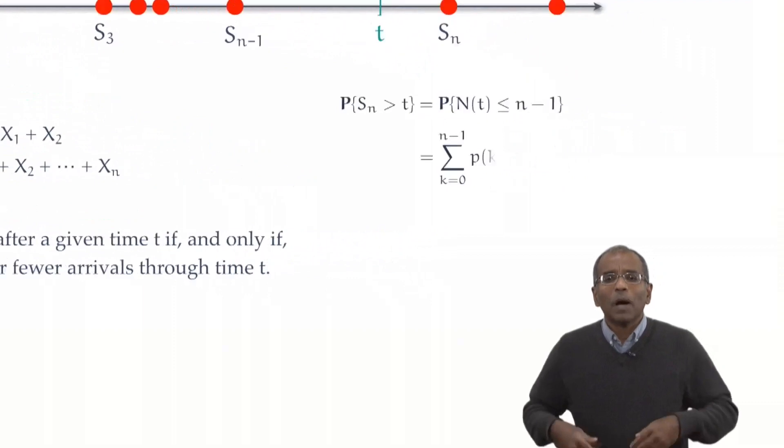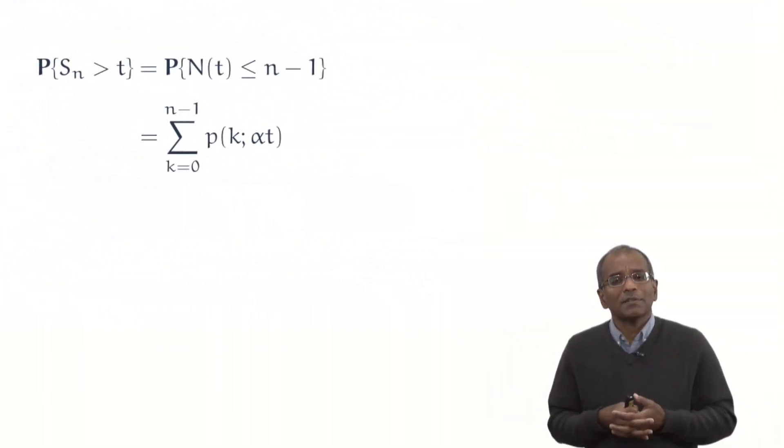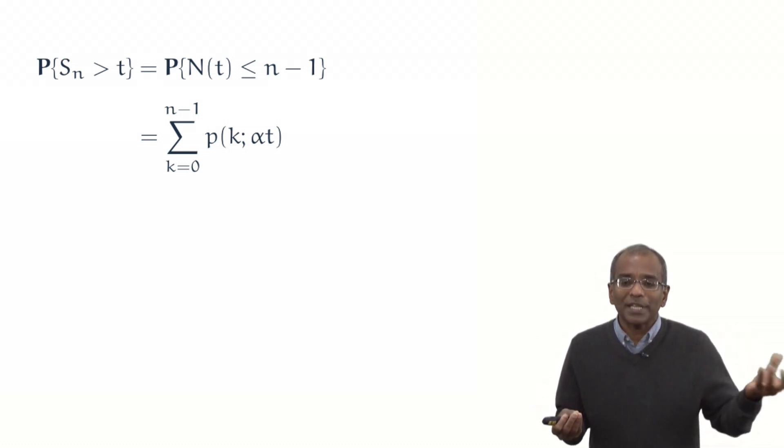And therefore, by one quick appeal to additivity, we say that this is the sum k running from 0 through n-1 of the Poisson probabilities, p(k) with the parameter alpha t.